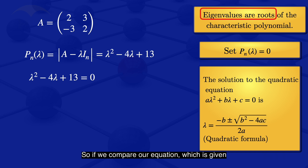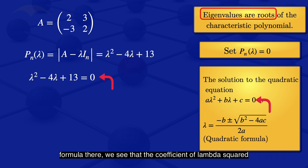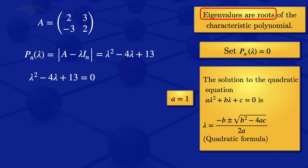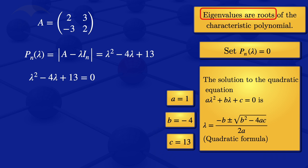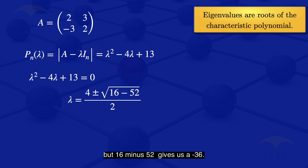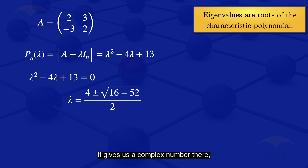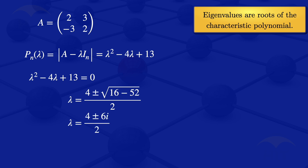Comparing our equation with the quadratic formula, the coefficient of lambda squared, which is our A, is 1. The coefficient of lambda, which is our B, is minus 4. And the constant C is 13. So using the quadratic formula, we would have lambda equal to 4 plus or minus the square root of 16 minus 52, divided by 2. Now 16 minus 52 gives us minus 36. The square root of minus 36 is 6i, because the square root of a negative number gives a complex number. So lambda equals 4 plus or minus 6i, divided by 2, which simplifies to 2 plus or minus 3i. So our eigenvalues are lambda 1 equals 2 plus 3i, and lambda 2 equals 2 minus 3i.